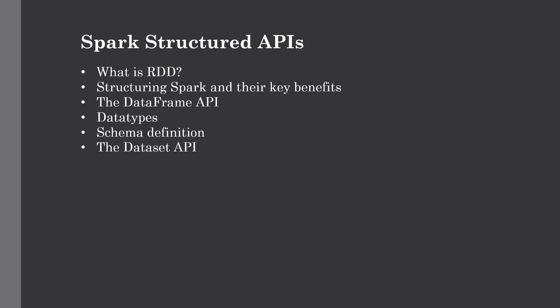RDD is the most basic abstraction of Spark, and there are three characteristics associated with it. The first is a dependency, which defines the RDD. Then come partitions and the compute function. All these are integral parts of a simple RDD. The dependency list instructs Spark how the RDD is constructed with its required inputs. When necessary, Spark can recreate the RDD from these dependencies, replicating the operations on top of it — and this gives the RDD its resilience.